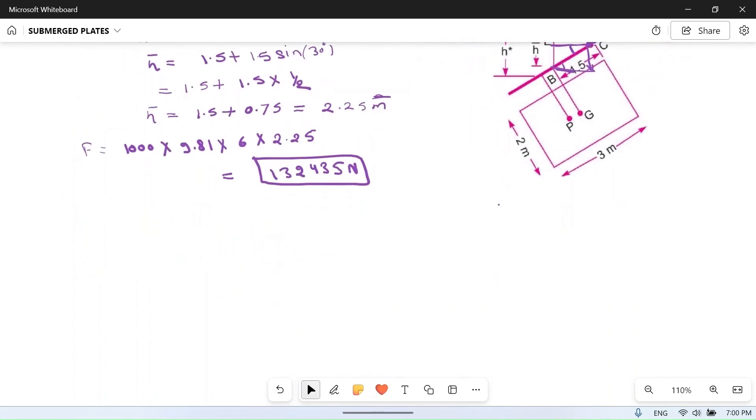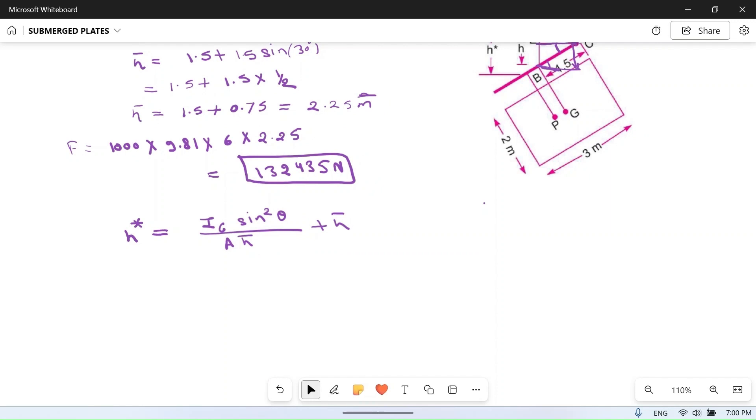What will be the center of pressure? For inclined surface, center of pressure h* is given as Ig sin²θ divided by Ah̄ plus h̄. We already know A and h̄. We have to find Ig. Ig is moment of inertia around centroid, which is bh³/12, so 2 times 3³ divided by 12, which equals 4.5 m⁴.